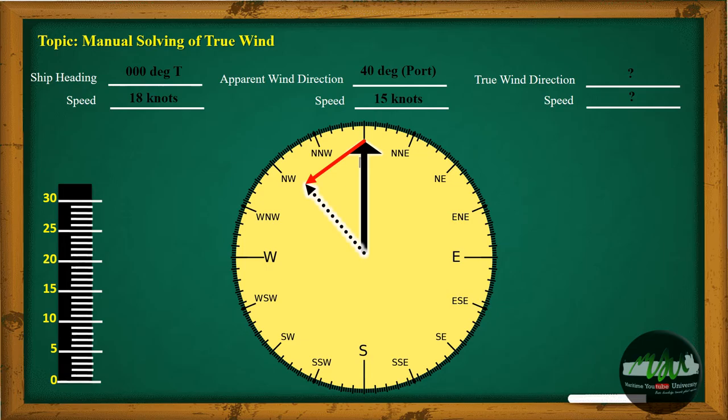The length represents the speed of the true wind. In this case, the speed of true wind is 11.7 knots.